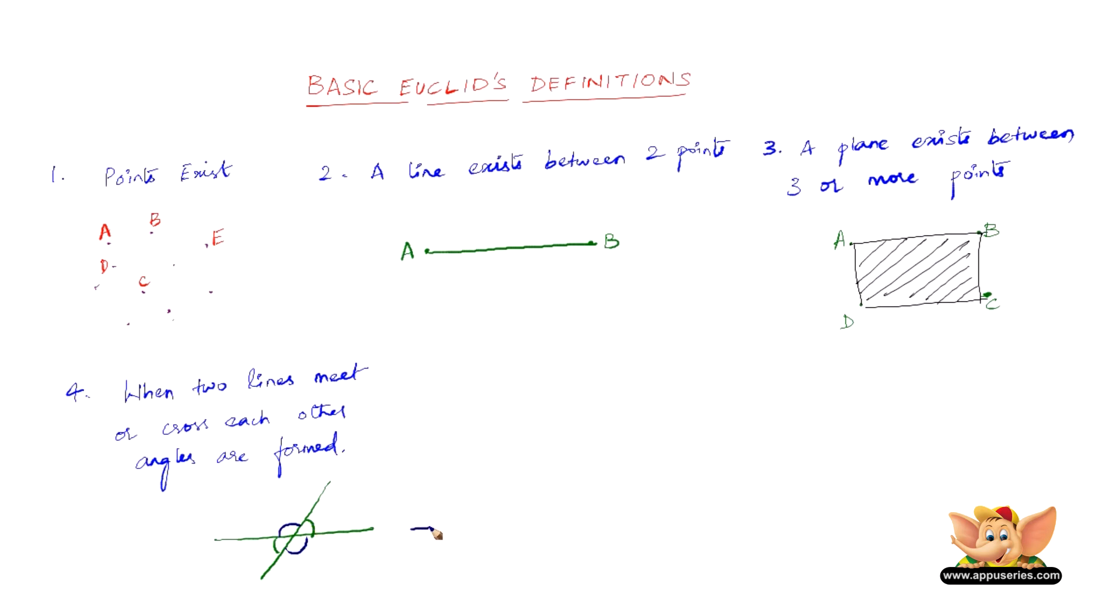And when all the angles are equal, that is called right angles. The right angle is a 90 degree angle.